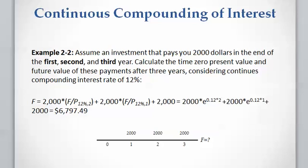Now we calculate the future value of these three payments. The first payment occurs at the end of year one, which is two years away from the future time, so n equals two. The second payment is one year away from the future time, so n equals one. The last payment is exactly at the future time, so n equals zero — we write $2,000 with no compounding needed. We then replace the factors with e^(0.12 × 2) for the first payment and so on to get the result.